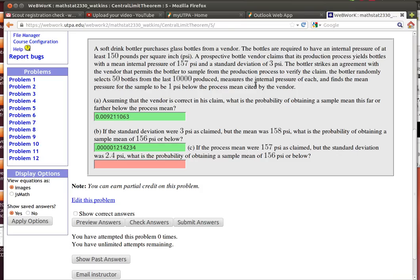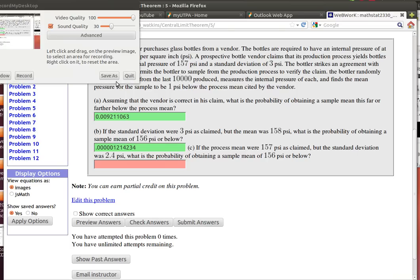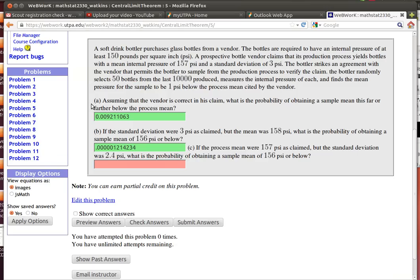The bottler strikes an agreement with the vendor and decides to buy some bottles, but he says that he's got to test the bottles first before he's going to pay for them. So they're going to test 50 bottles.